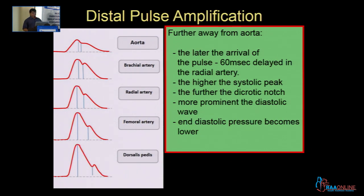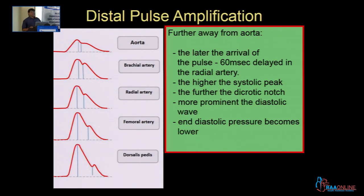Distal pulse amplification is because of a change in the impedance of the peripheral arteries as you go more peripherally, and also because of a change in the reflection of the pulse pressure. What happens is there is a later arrival of the pulse pressure — for example, the radial artery pulse comes 60 milliseconds later than an aortic arterial pulse. The systolic pressure increases, the diastolic pressure decreases, and the dicrotic notch comes in a little later, but there is no change in the mean arterial pressure.